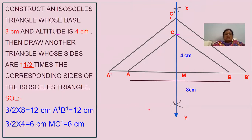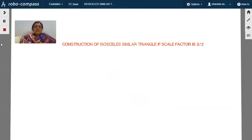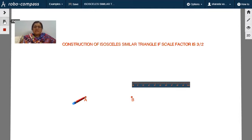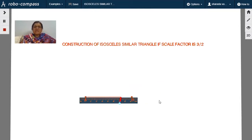Let us see how to construct these similar isosceles triangles. This is the construction of isosceles similar triangles. The scale factor given is three to two ratio. It is given that the length of the line segment is eight centimeters, so you have to mark a line segment AB equal to eight centimeters.